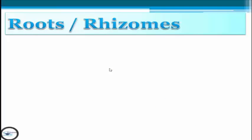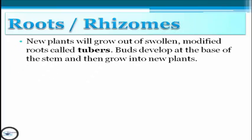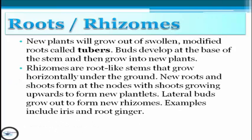The second example for natural vegetative propagation is roots, or what you call rhizomes. New plants will grow out of swollen and modified roots called tubers. Buds develop at the base of the stem and then grow into new plants. Rhizomes are root-like stems that grow horizontally under the ground. New roots and shoots form at the nodes, which shoot upwards to form new plantlets, and lateral buds grow out to form new rhizomes.